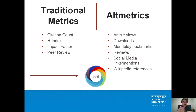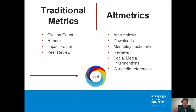Traditional metrics include things like citation count, something called an H-index, the impact factor of a journal, and whether the article has been peer-reviewed. Whereas altmetrics arose in the digital age and include things like article views, downloads, bookmarks, reviews, social media mentions, and Wikipedia references.